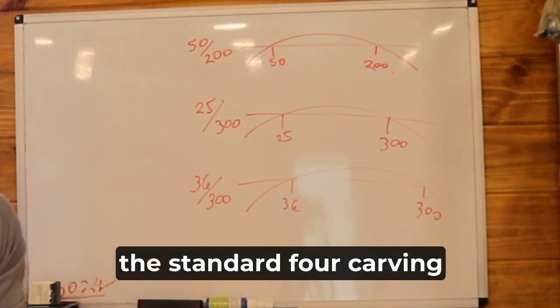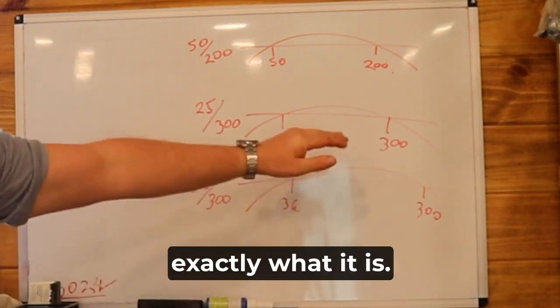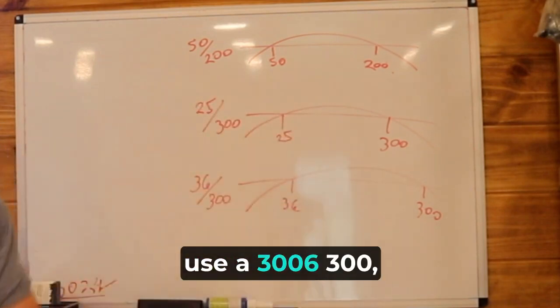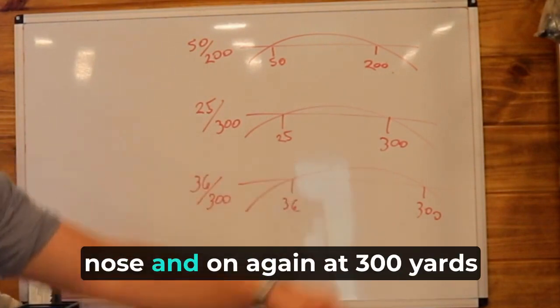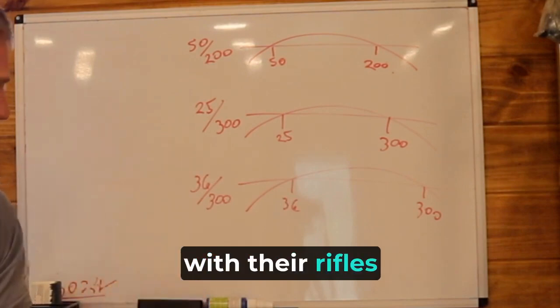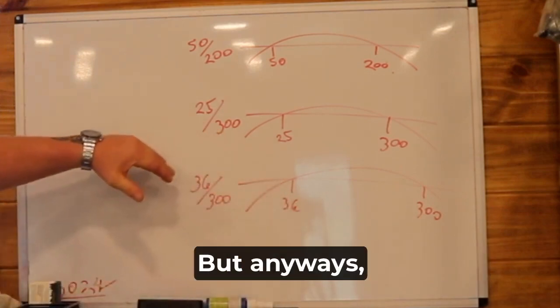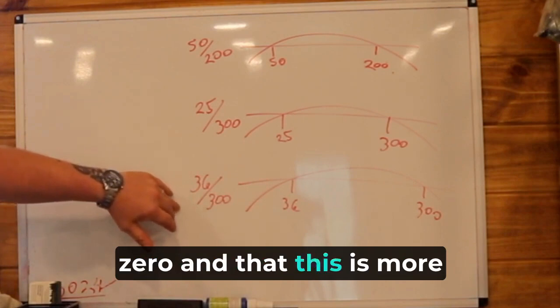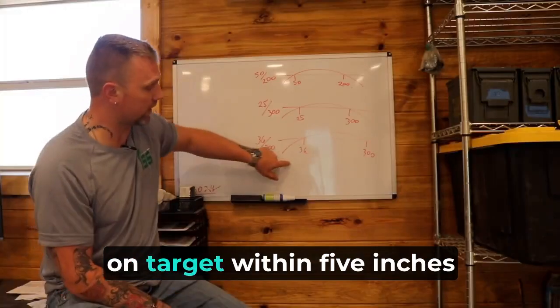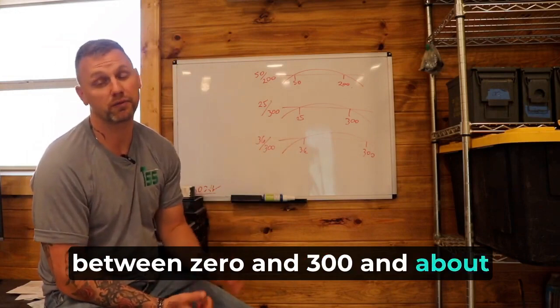I can't remember now exactly what it is. But so you're going to have this 25-300 and then the Marines use a 36-300. I believe it's 36 yards on the nose and it's on again at 300 yards on the nose for theirs. The reason that this is a better zero and that this is more accurate is because a 36-yard zero, you're actually going to be on target within five inches of a five inch group between zero and 300 and about 350.